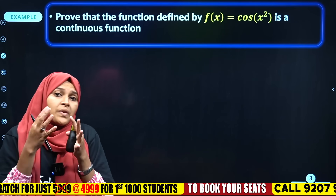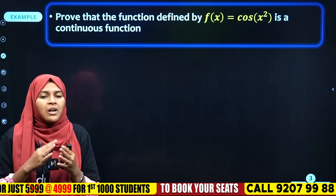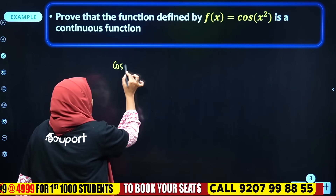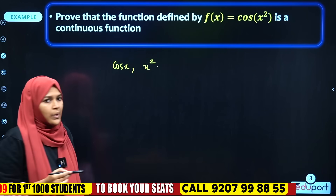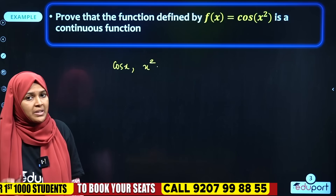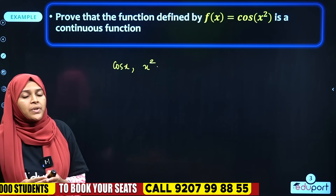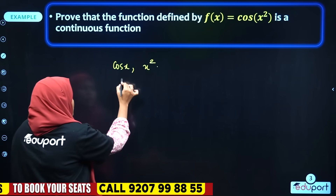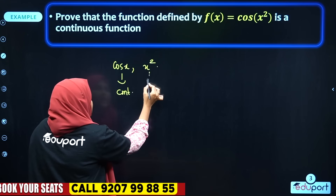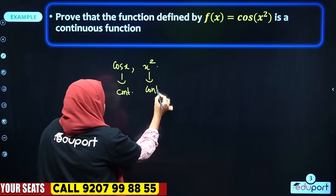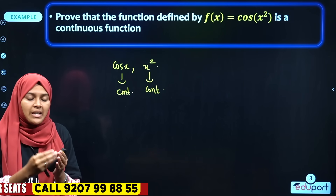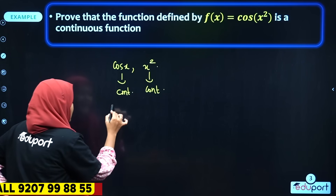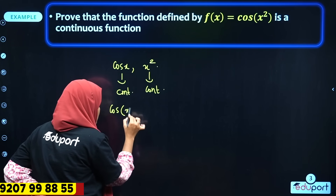For a similar question: f(x) = cos(x²). This is a continuous function because cos(x²) is the composition of cos(x) and x². Cosine is a trigonometric function and x² is a polynomial function. Since both are continuous functions, their composition is also continuous.